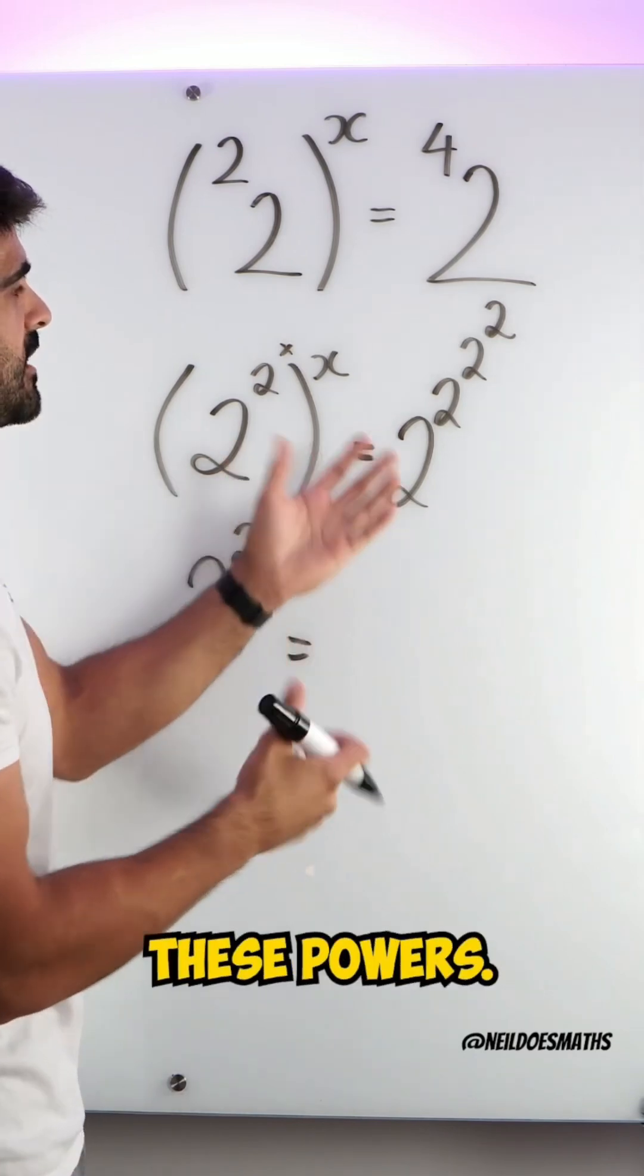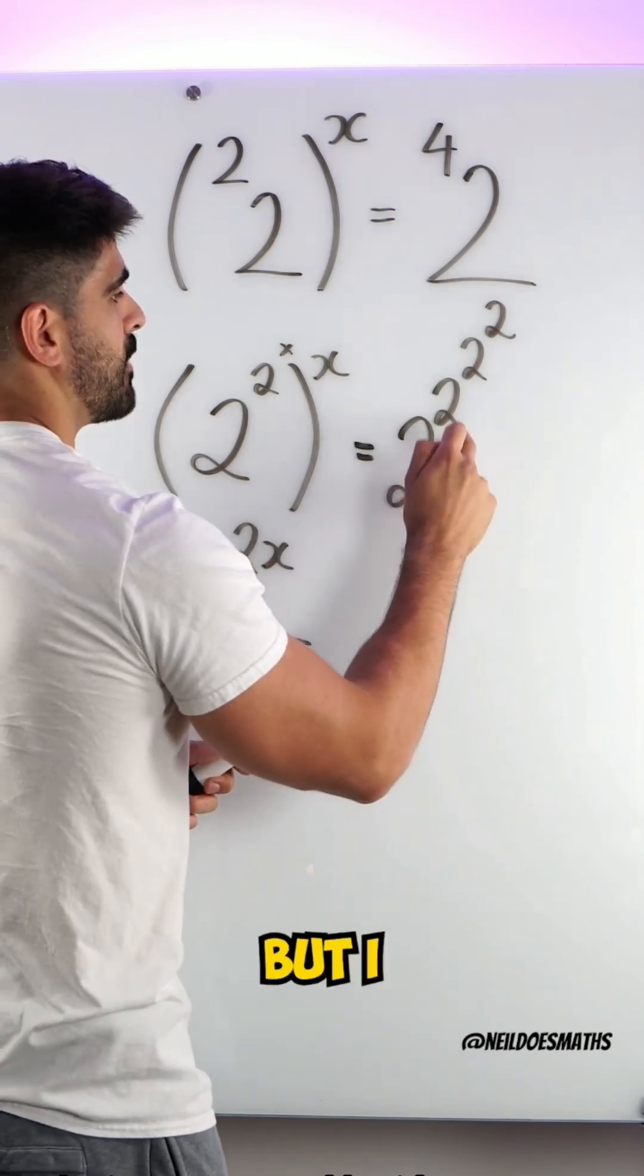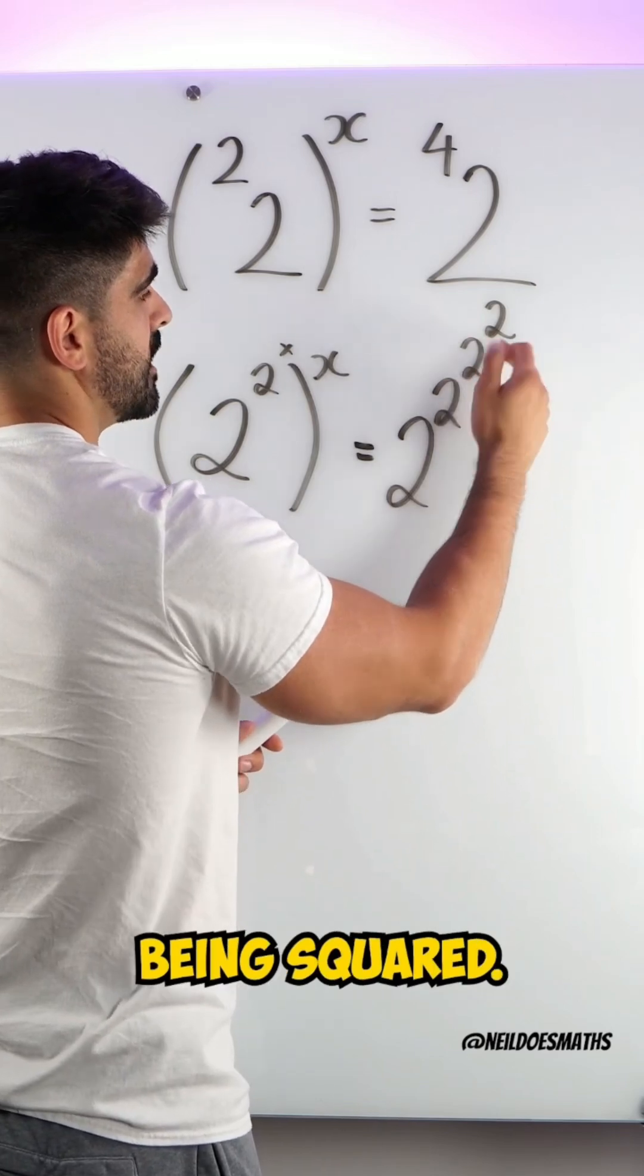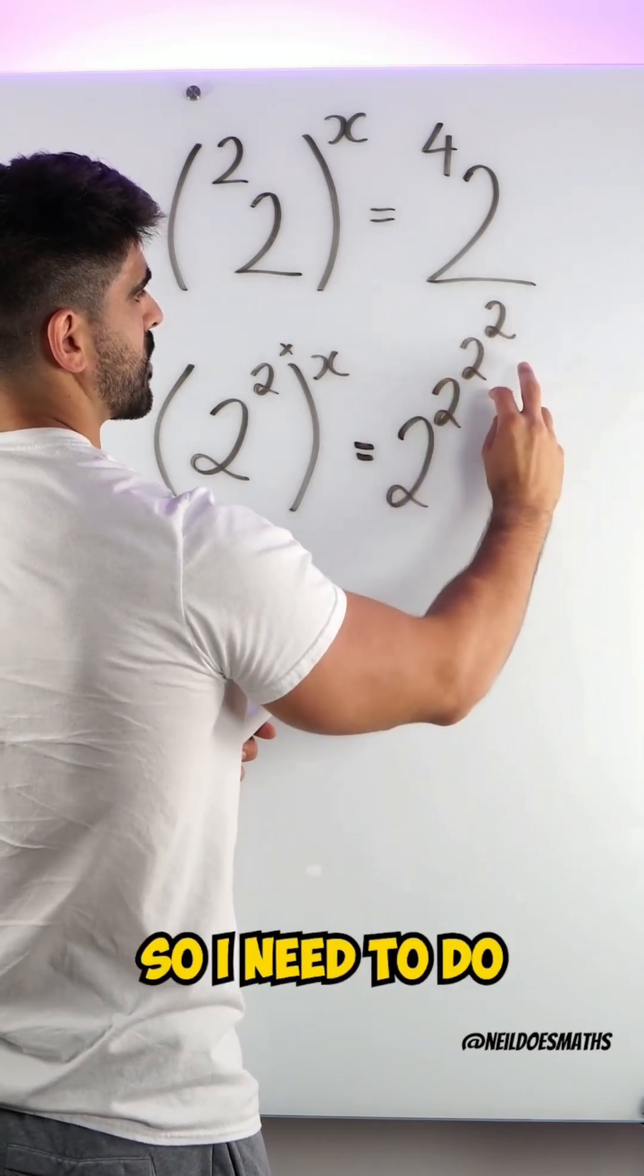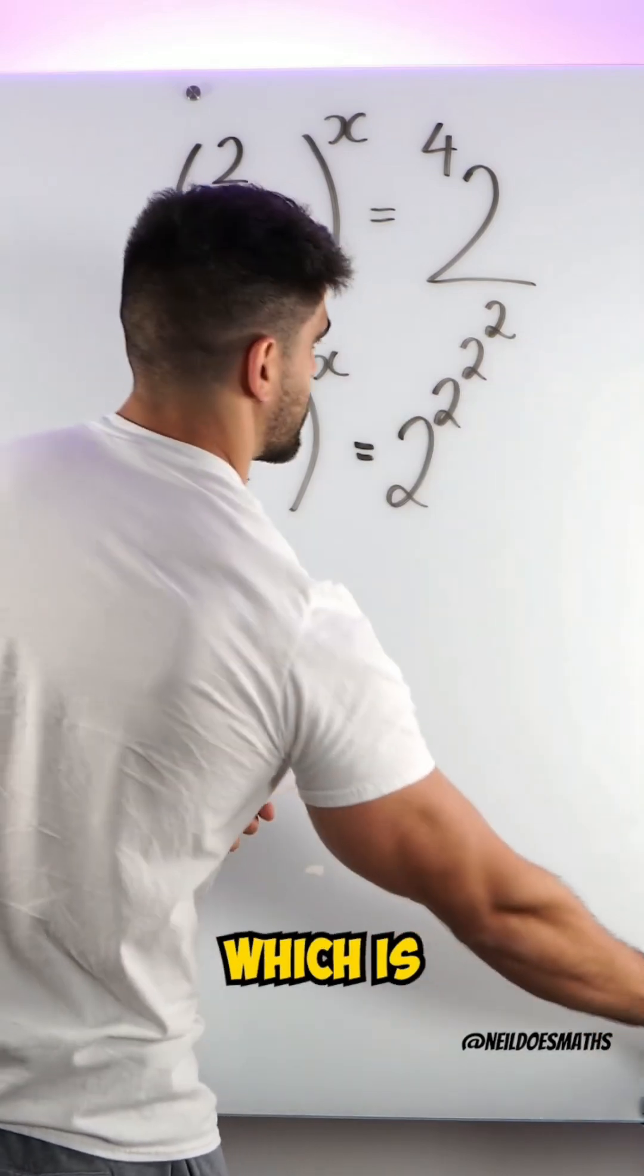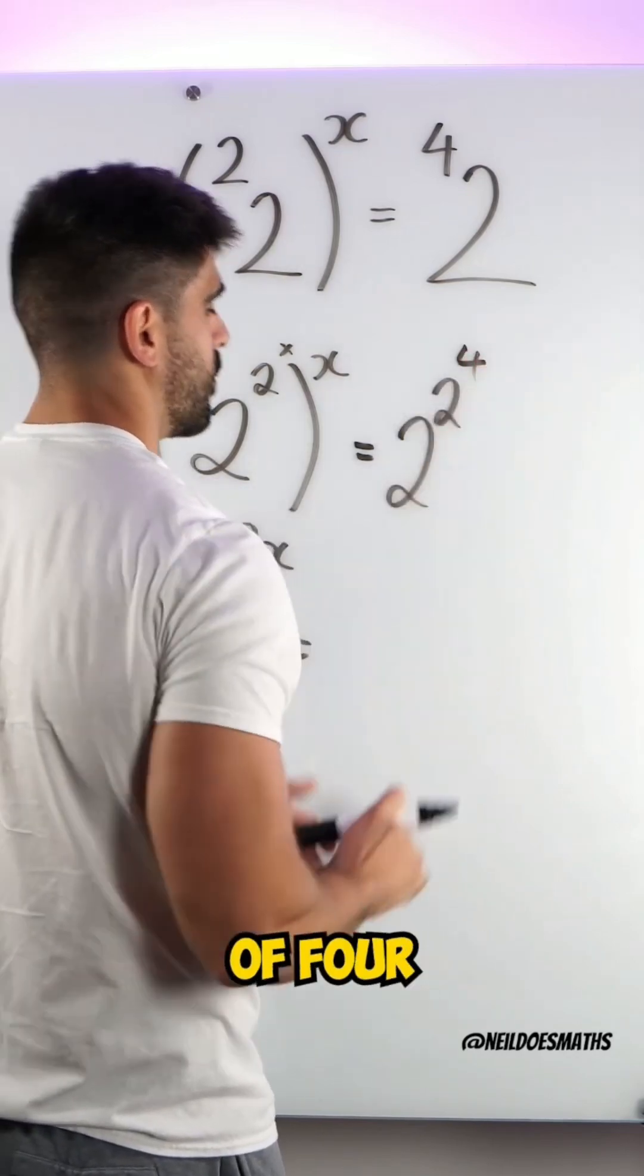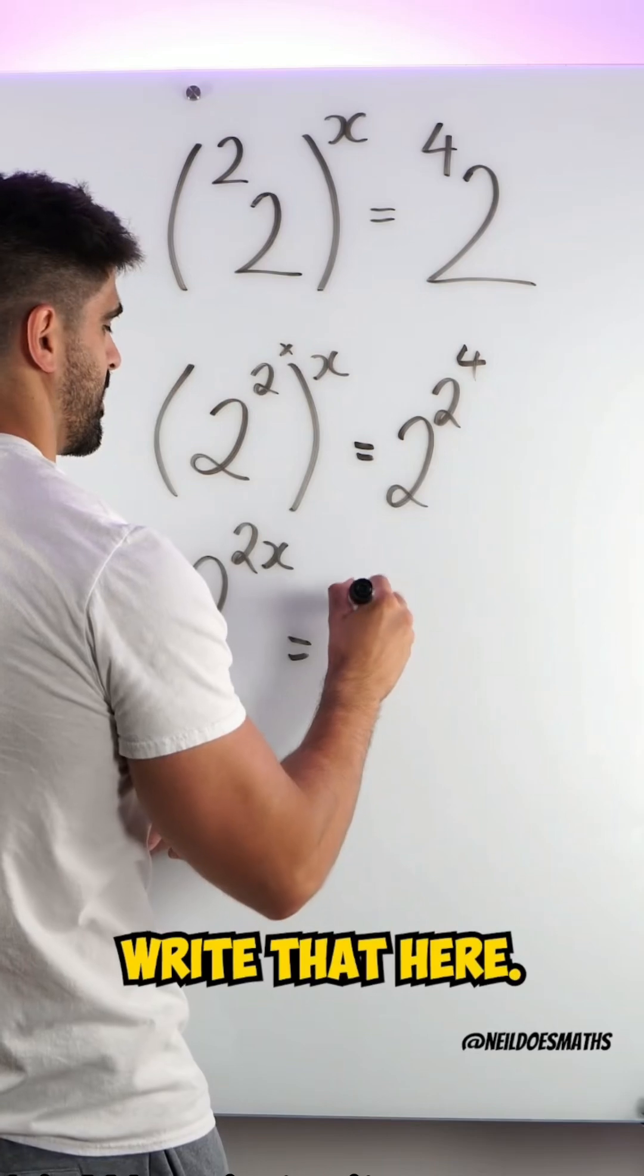And here we need to evaluate these powers. I want to do 2 squared, but I can't do that because it's being squared. And I can't do this because it's also being squared. So we actually need to work from right to left. So I need to do 2 squared first, which is 4. And then I need to evaluate 2 to the power of 4, which is 16.